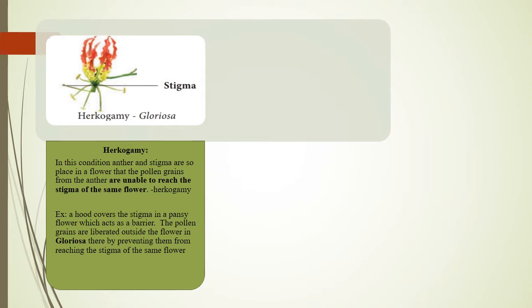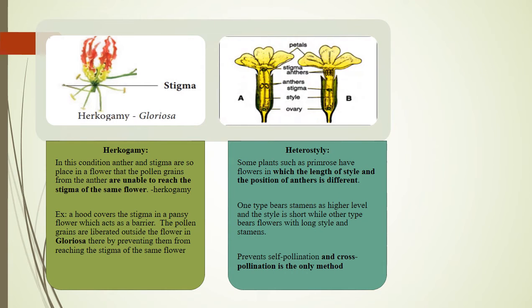Heterostyly: Some plants such as primrose have flowers in which the length of style and position of anthers is different. One type bears stamens at a higher level with a short style, while the other type bears flowers with a long style and short stamens. This prevents self-pollination, making cross-pollination by insects the only method.